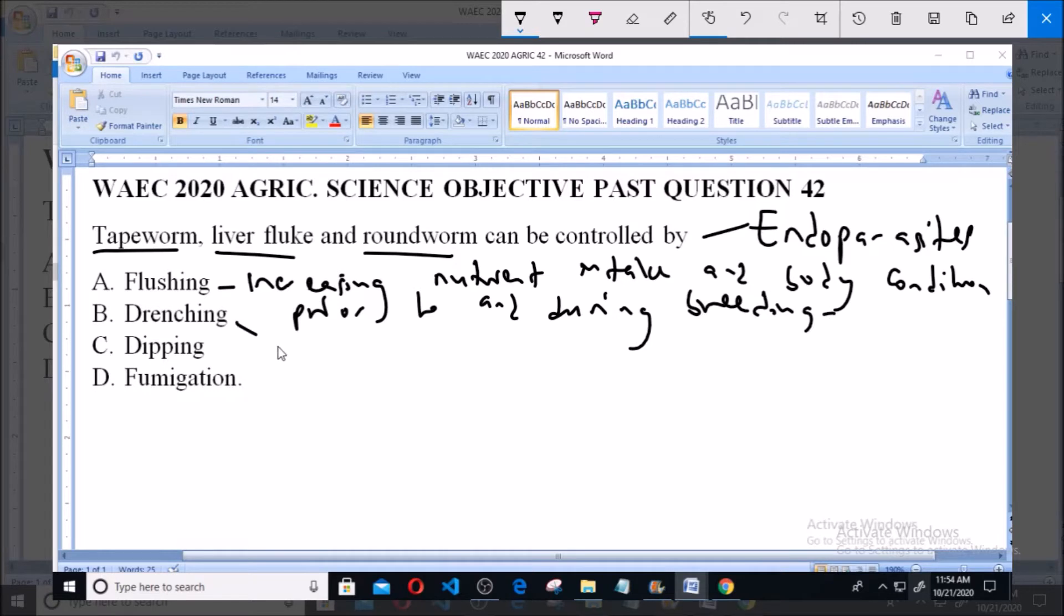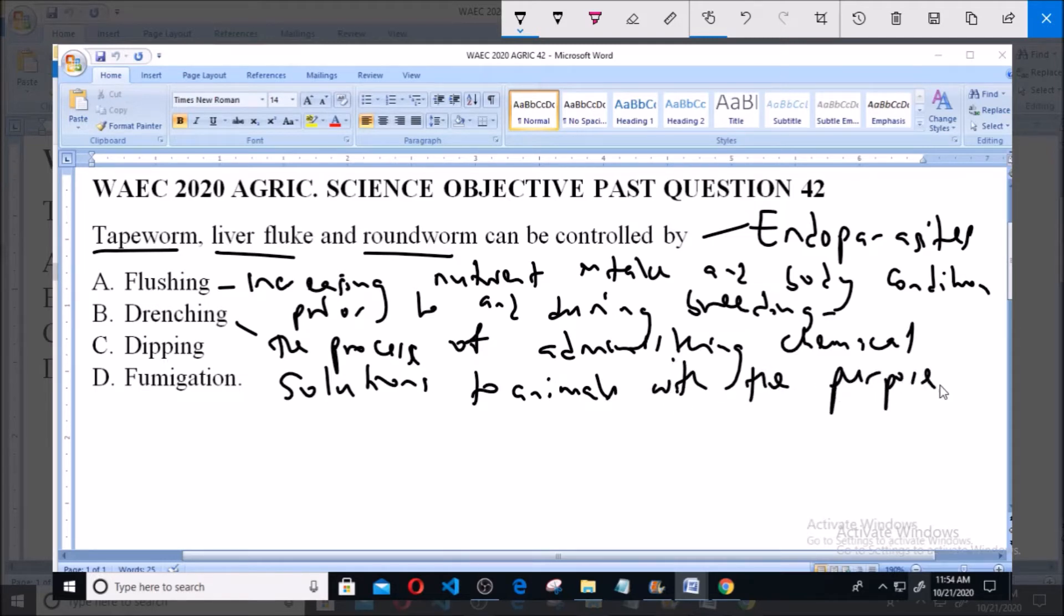Now option B says drenching. Now drenching refers to the process of administering chemical solutions to animals with the purpose of protecting them from various parasites.